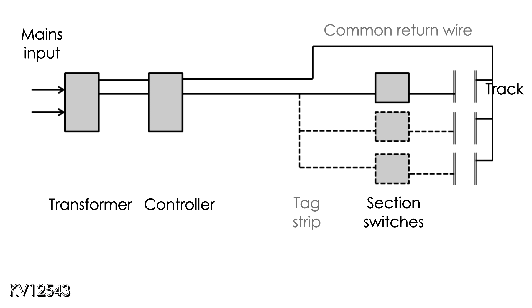This can be simplified a little by using what is known as common return wiring. At its simplest it means that one rail round the whole layout is permanently connected to a controller whilst the other rail can be turned on and off using section switches.